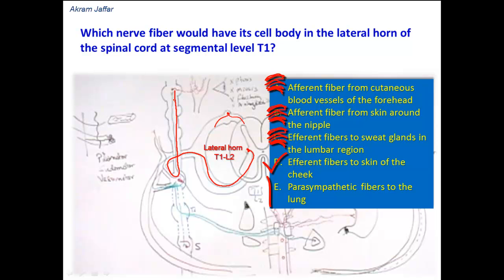Option E: parasympathetic fibers to the lung. The source of these parasympathetic fibers is the vagus nerve, which is the 10th cranial nerve — not a spinal nerve. In the region of the thorax, the vagus nerve supplies parasympathetic fibers to the lung, to the heart, to the esophagus, and then continues to supply parasympathetic fibers to the abdominal viscera. Therefore, the lateral horn of the spinal cord at segment level T1 supplies efferent fibers to the skin of the cheek.